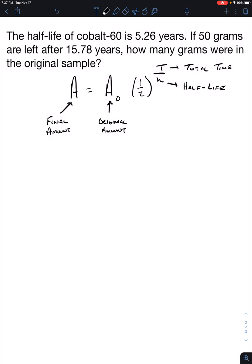So a, our final amount, it says that 50 grams are left. So we know that that is going to be a, and it's equal to the original amount. Well, that's what we're solving for. Times one half to the total time t. The total time, it says, is 15.78 years, and that's going to be divided by the half-life, and the half-life is 5.26 years.